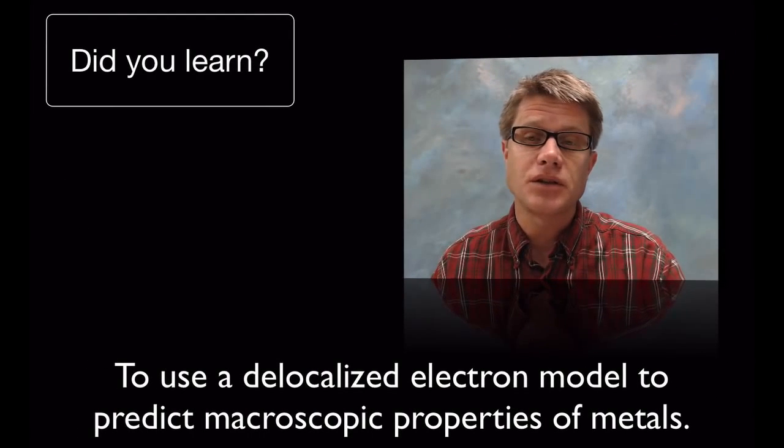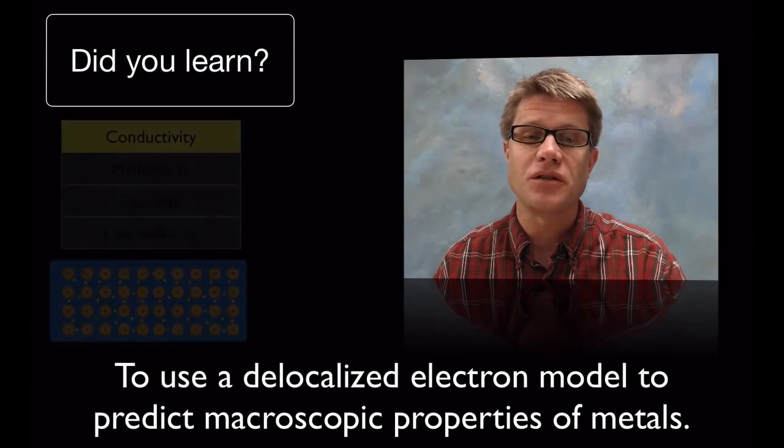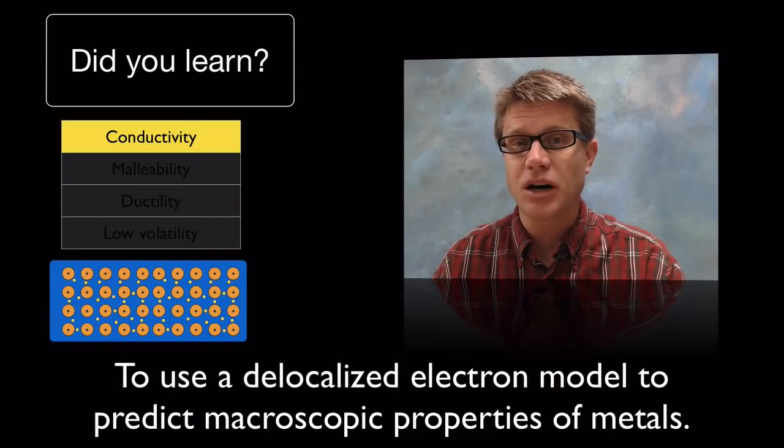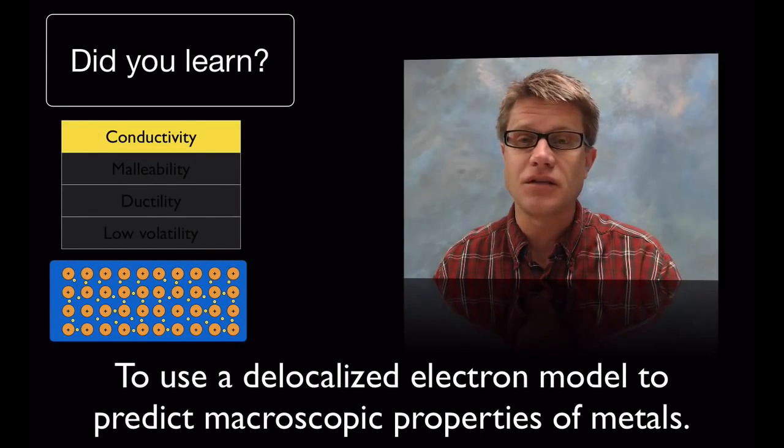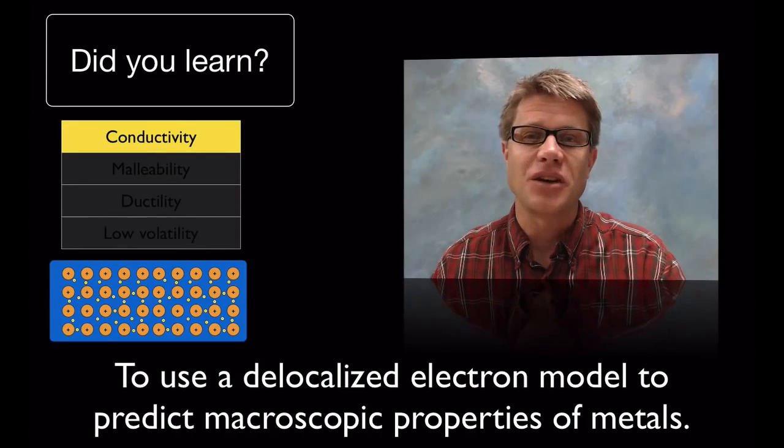And so metallic bonding is pretty simple. Did you learn to use a delocalized electron model to predict the macroscopic properties of metals? If you understand the sea model and you see how it affects conductivity, malleability, ductility and low volatility, then you got it. And I hope that was helpful.